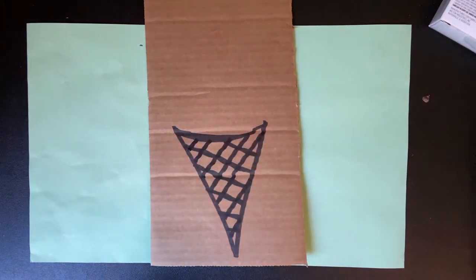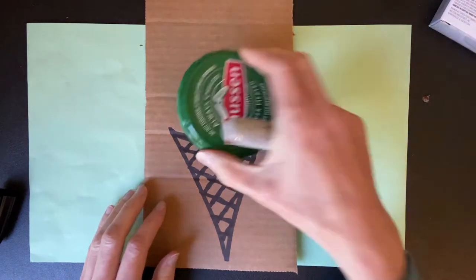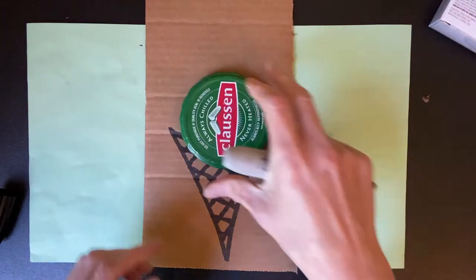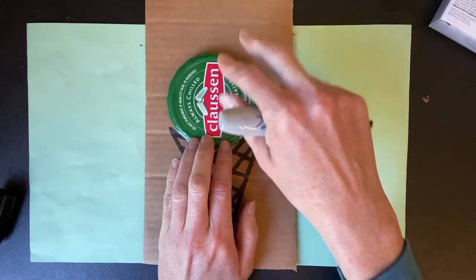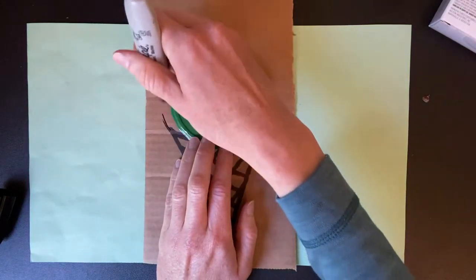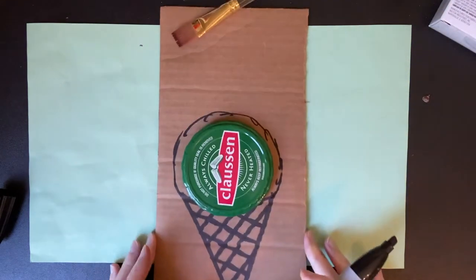Now for the ice cream, it does kind of help to find something to draw around, so you know how big to make your ice cream scoops. So I have a lid here from a pickle jar. And so this is kind of a good size. I'm just going to kind of go around this one, so I know I want my ice cream about that big, right, when I use my shaving cream.